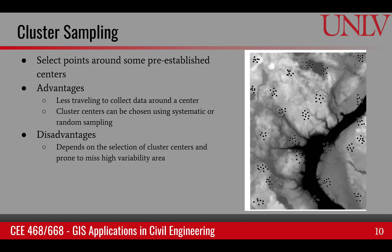The third type is cluster sampling. We select some points through a random or systematic process, then travel to each and take a few samples before moving to the next point. The advantage is it involves less traveling. These cluster centers can be chosen randomly or systematically. However, it has the disadvantage of depending on the selection of cluster centers and could be prone to missing high-variability areas — for example, we might totally miss a high-slope area in part of the region.